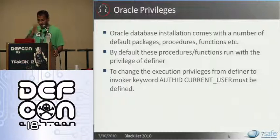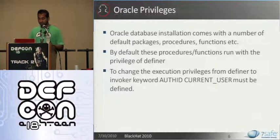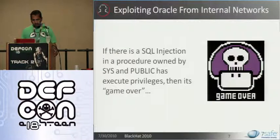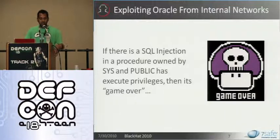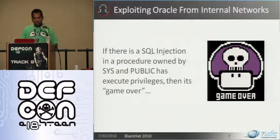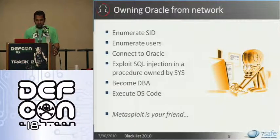How do we hack Oracle from internal networks? In a nutshell, if there is a SQL injection in a procedure owned by SYS and public has execute privileges, then whatever you inject gets executed as SYS. So you can elevate your privileges, become SYS, and once you have SYS permissions you can execute OS code. In a few steps: first enumerate the SID, which is the database name; then enumerate common users like Scott, Tiger, SYS with weak passwords; then connect to the Oracle database.